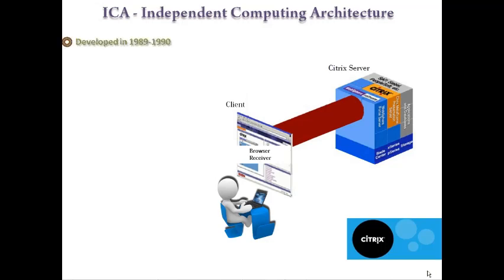ICA stands for Independent Computing Architecture. The first version of ICA Protocol was developed in 1989-1990, and it was used in Citrix multi-user version and for the Microsoft OS/2 operating system.